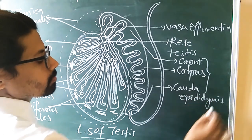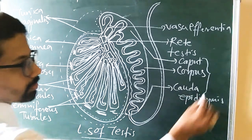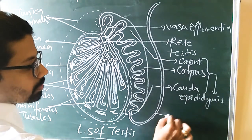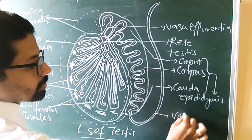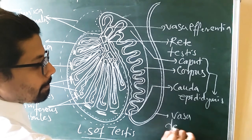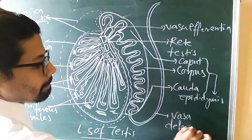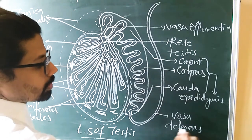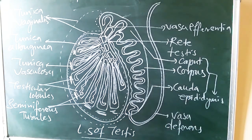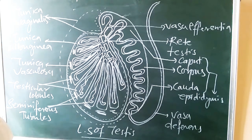You can label this region as vas deferens. That's all — I hope it's clear how to draw this diagram. Today we'll stop here; in the next session we will continue with the other structures.